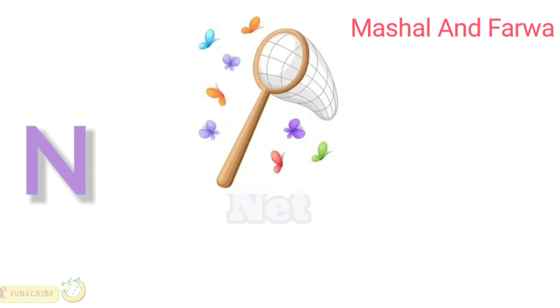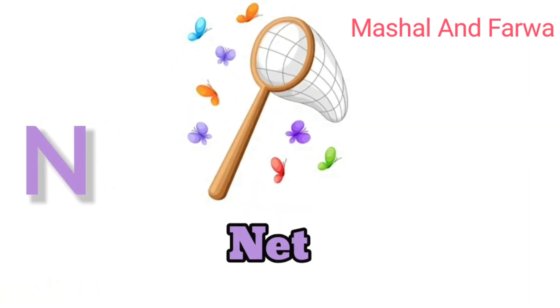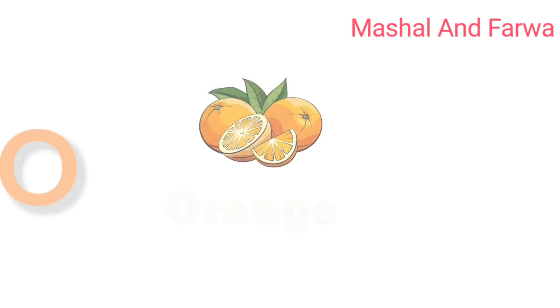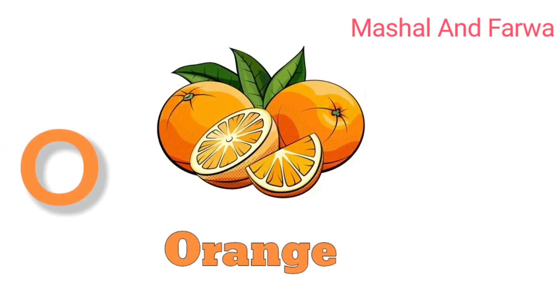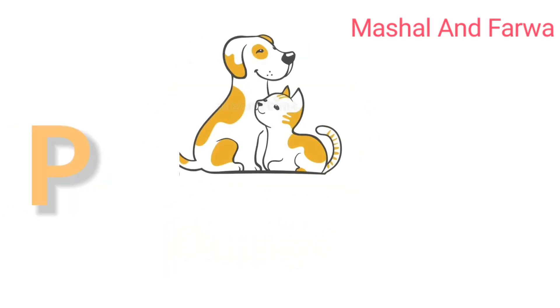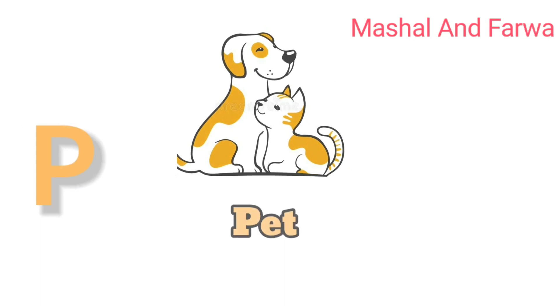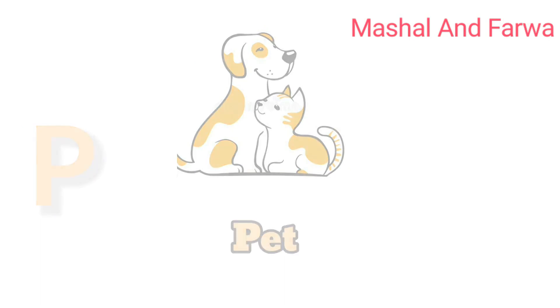R is for net, na-na-nat. O is for orange, o-o-orange. P is for pet, p-p-p-pet.